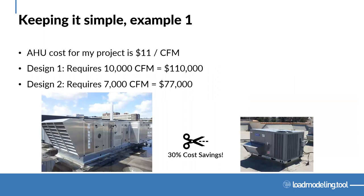A quick example: suppose the air handling for a project costs $11 per CFM all-in. If I have one design requiring 10,000 CFM based on my load model — internal loads, glazing, all of that — that's about $110,000. Now if I have an alternative design where I've reduced plug loads, gone with a slightly higher performing glass, and reduced the peak CFM needed to cool the space to 7,000 CFM, I get a 30% cost savings on that unit alone. So even before going to a detailed cost estimate, I can do these quick checks as I'm designing to see if I'm making a positive impact and optimizing that cost for the project.